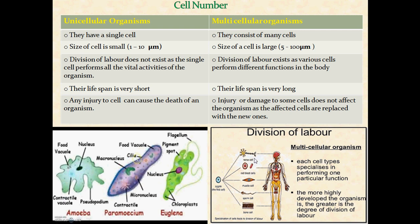The lifespan of unicellular organisms is very short because if the single cell gets damaged or injured, the whole organism is destroyed. In multicellular organisms the lifespan is very long because if a single cell gets damaged, a new cell takes its place. Thank you students — this was a discussion about cell number, unicellular and multicellular organisms. You can note it down in your copy.